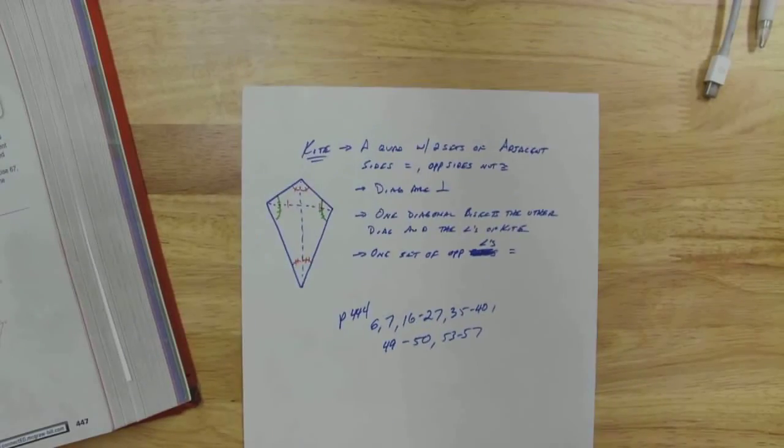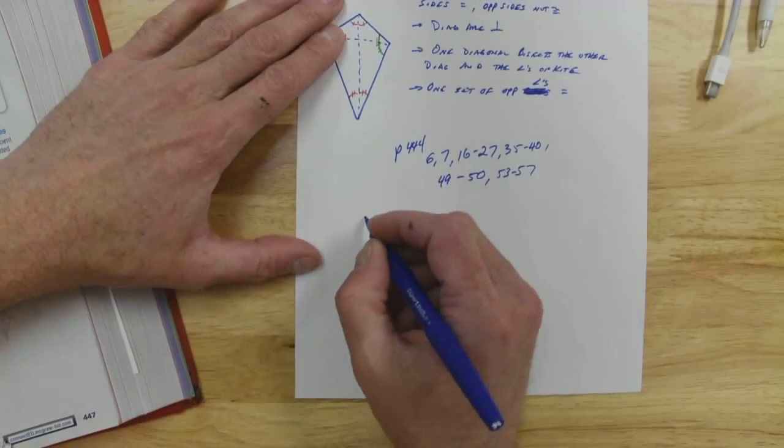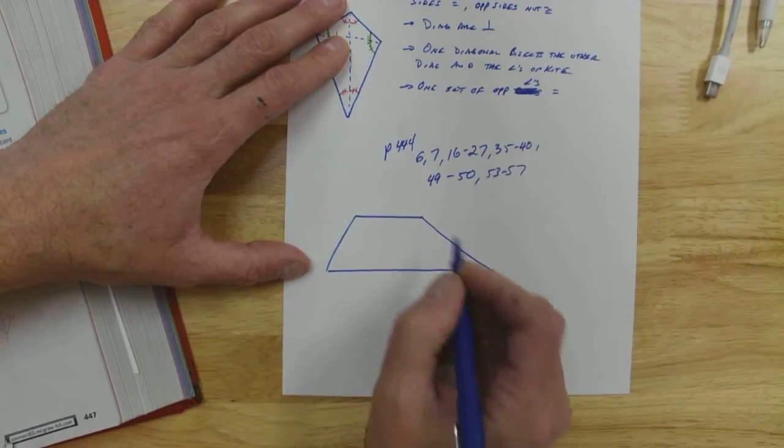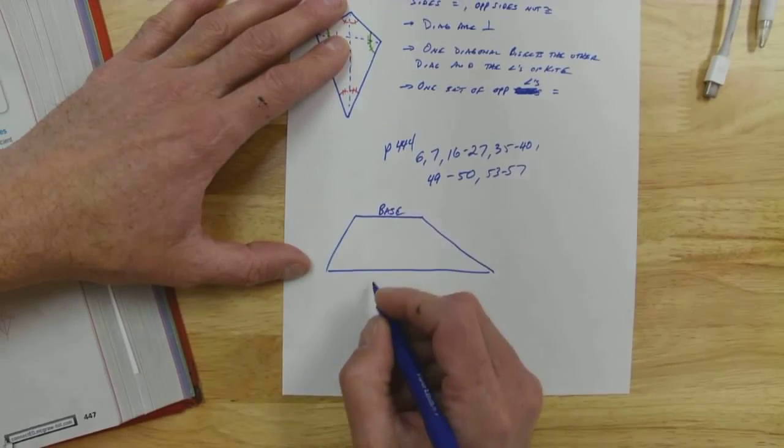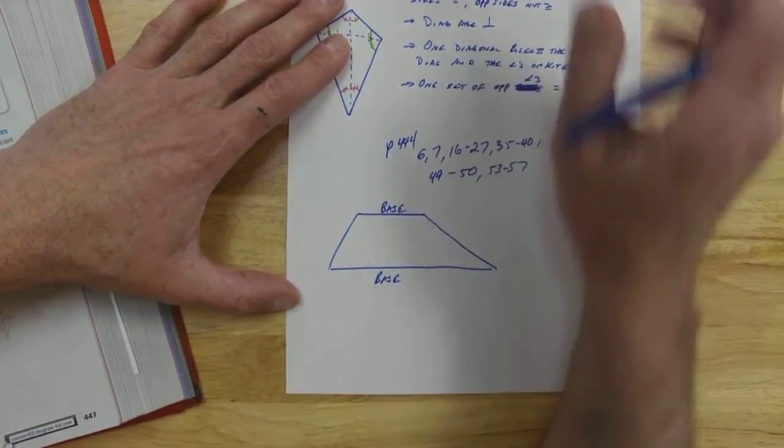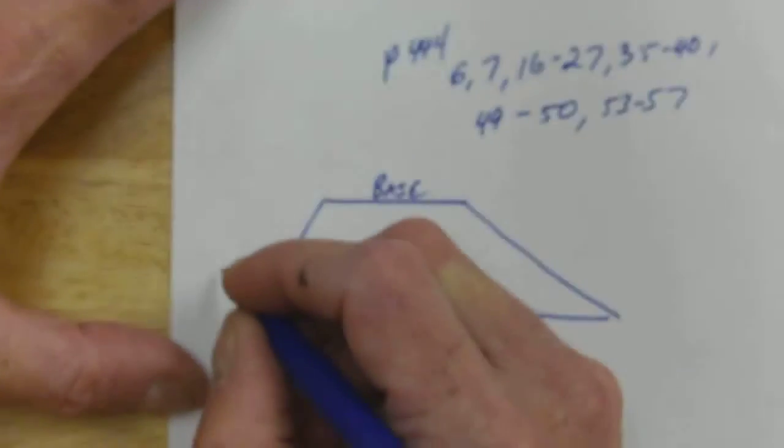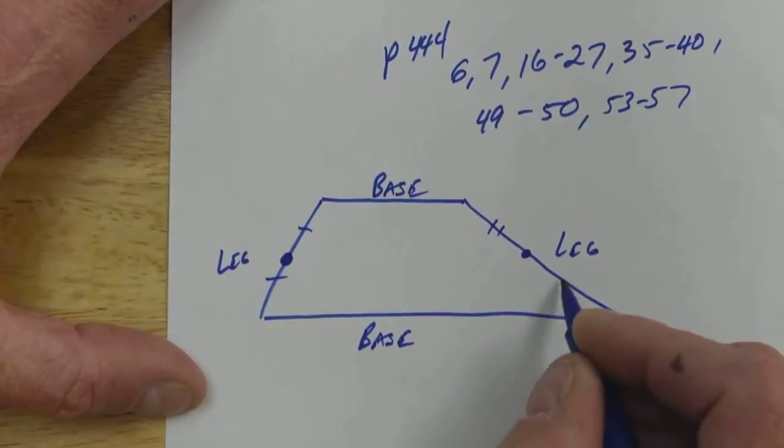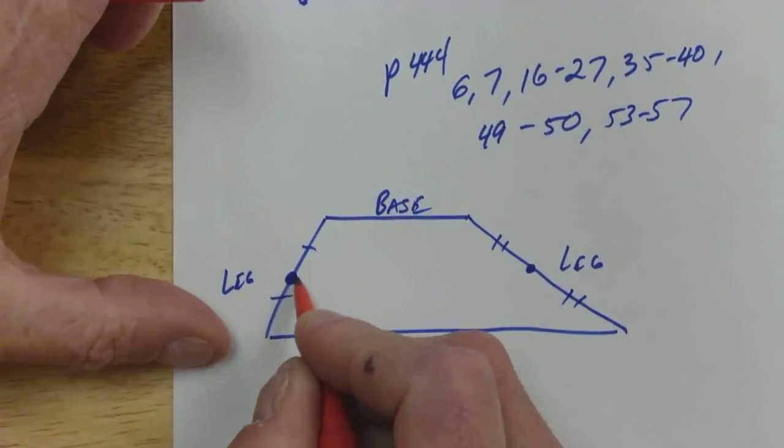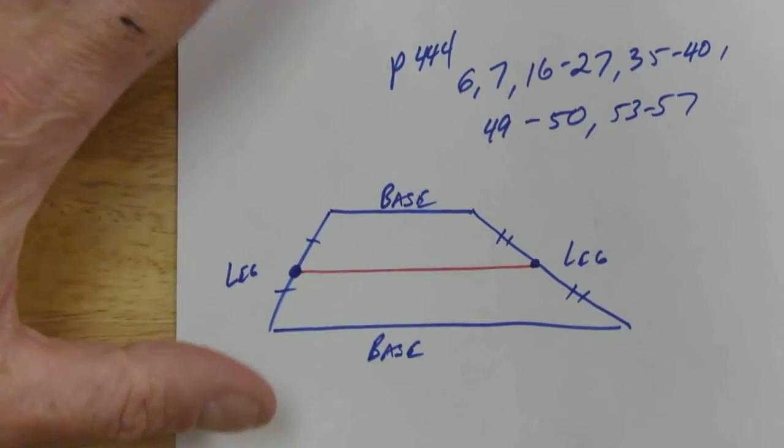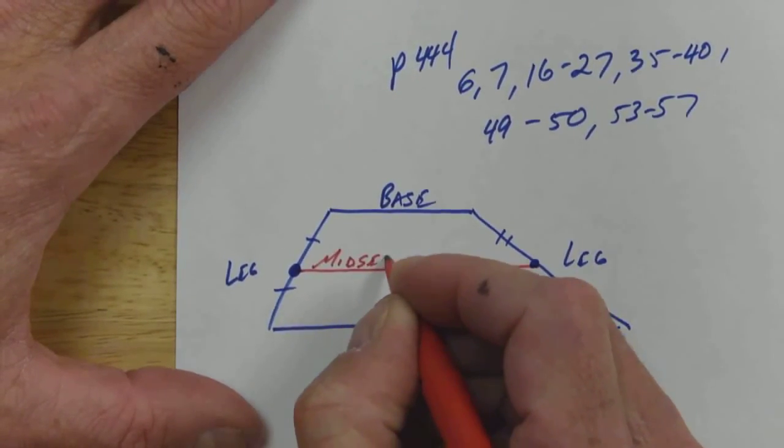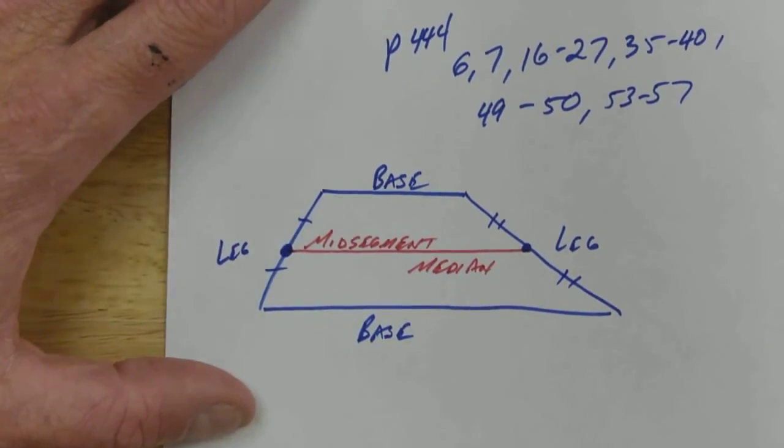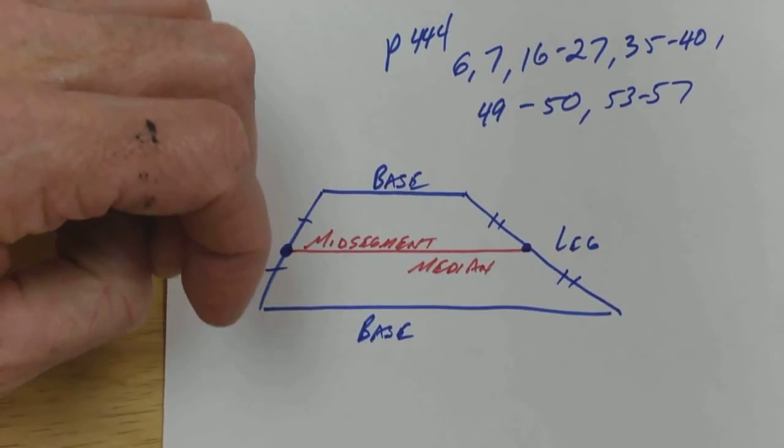One thing about a trapezoid that's very important that I left out. This is a base, this is a base. What are the other sides called? Legs. If I go from the midpoint of a leg to the midpoint of the other leg, I get this brand new segment, and it's actually called two different things - a midsegment or a median. The length of that is the average of my two bases. So let's write a note: my midsegment is equal to base one plus base two divided by two.